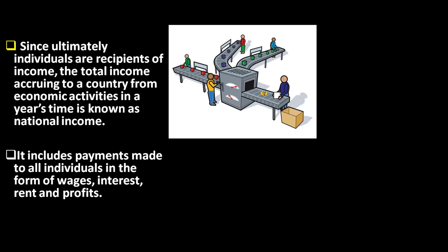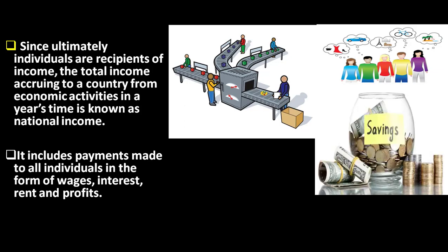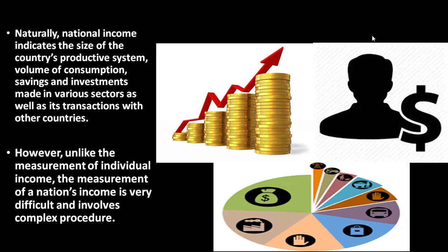Since ultimately individuals are the recipients of income, the total income accruing to a country from economic activities in a year's time is known as national income. It includes payments made to all individuals in the form of wages, interest, rent, and profits.